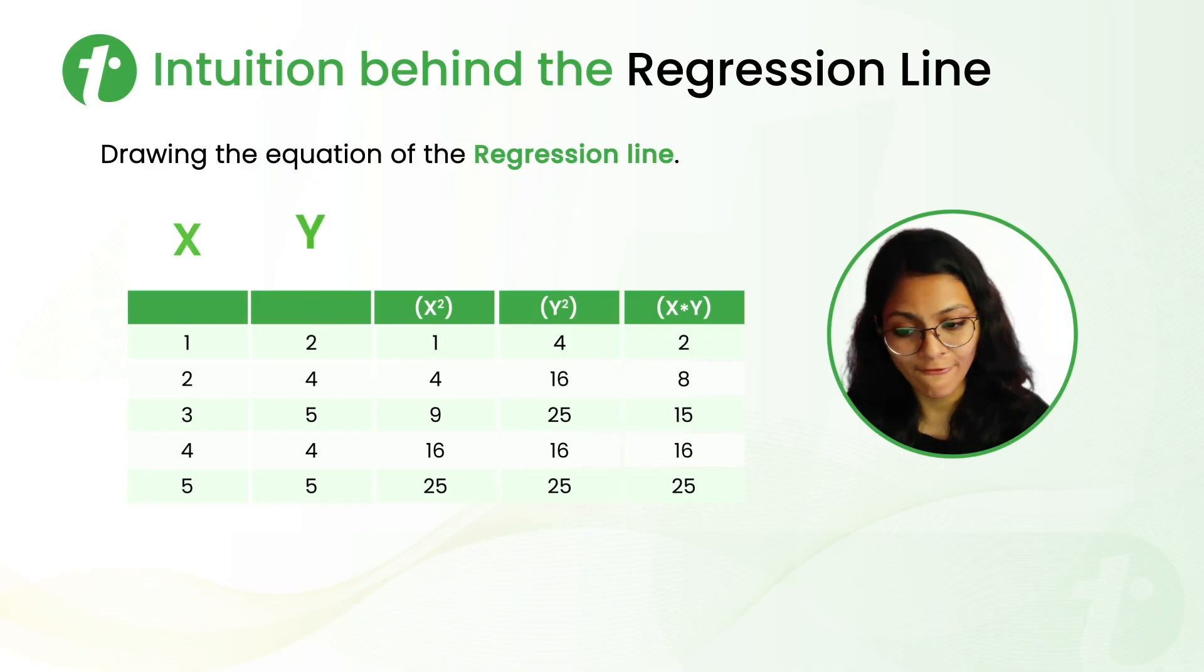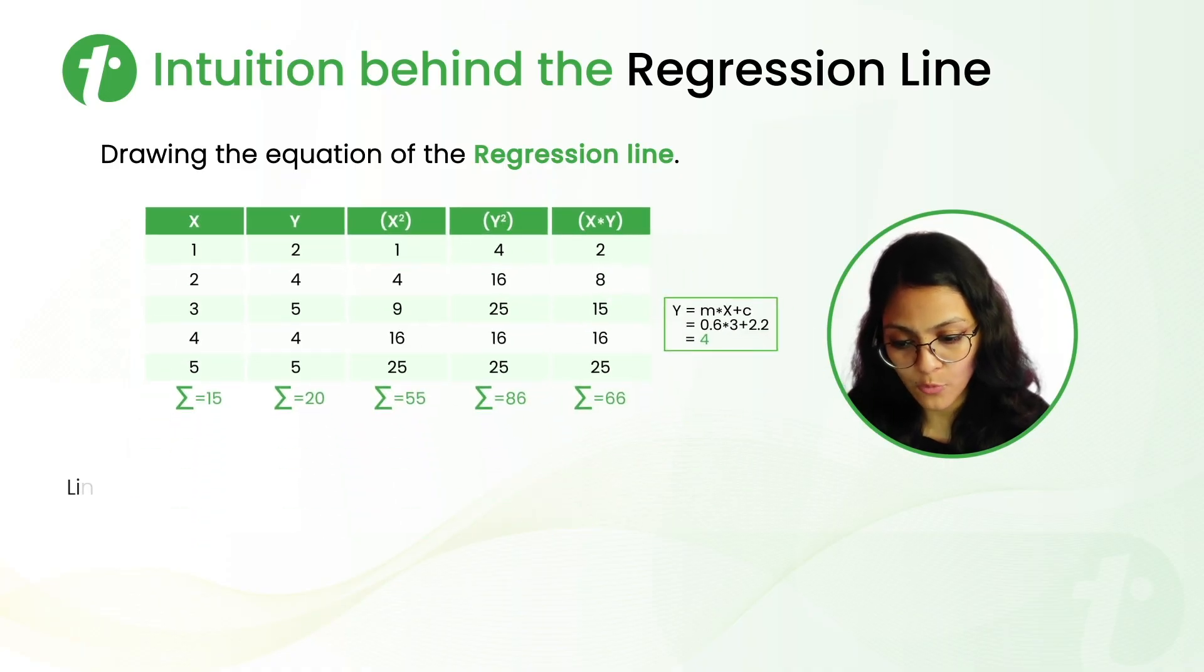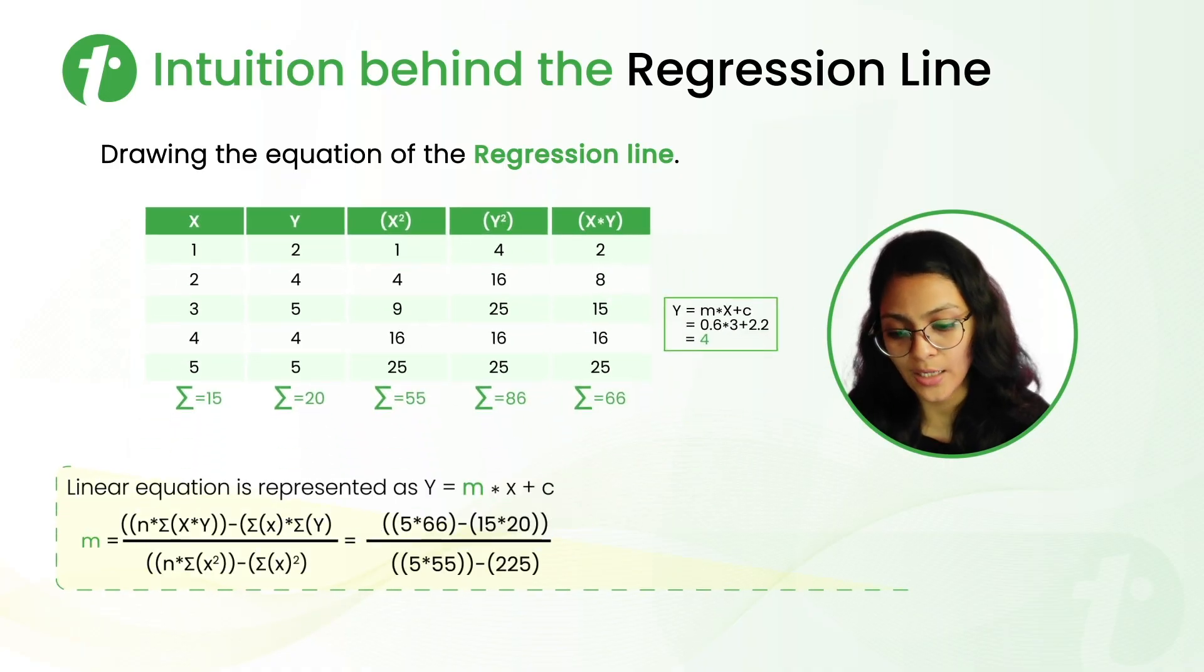So, we have X, we have Y. Now, we have X squared, Y squared and X into Y. We get all the summation of these columns.